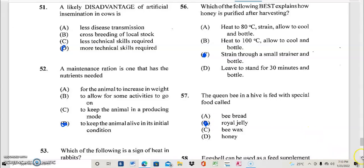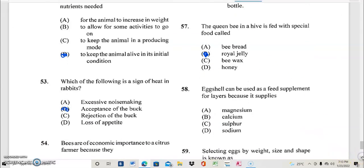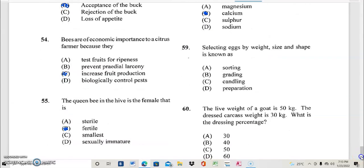Question 58. And we are going down nicely. Oyster shell can be used as a feed supplement for layers because it supplies? And the best possible answer for 58 is that oyster shell provides? What do you think the answer is? It provides calcium, B. So the answer to question 58 is B.